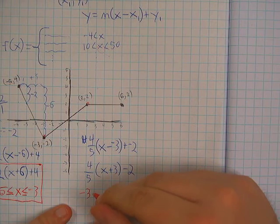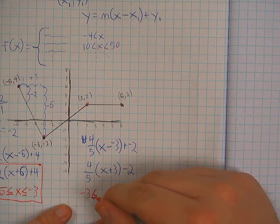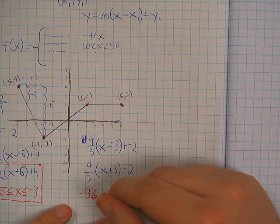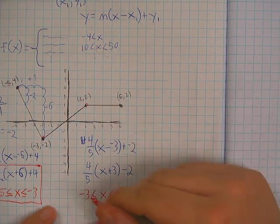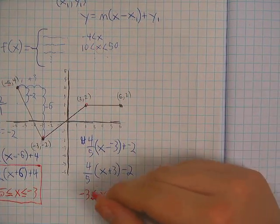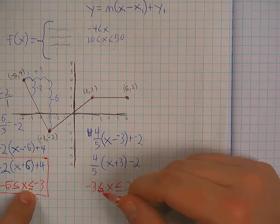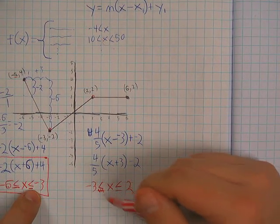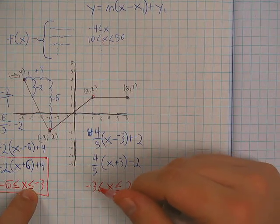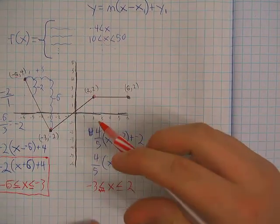Now I just need to list the domain. This section goes from negative three to positive two — all x-values greater than negative three and less than or equal to positive two. I only use strict greater-than here so I don't catch x equals negative three twice.